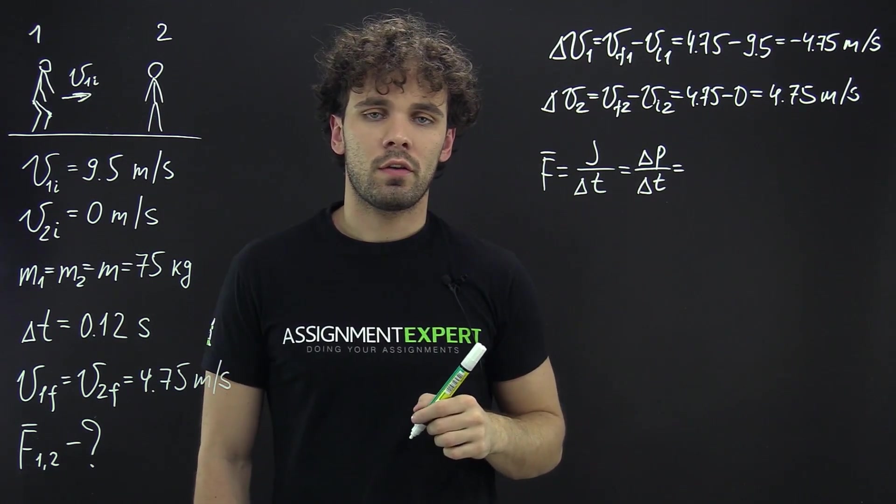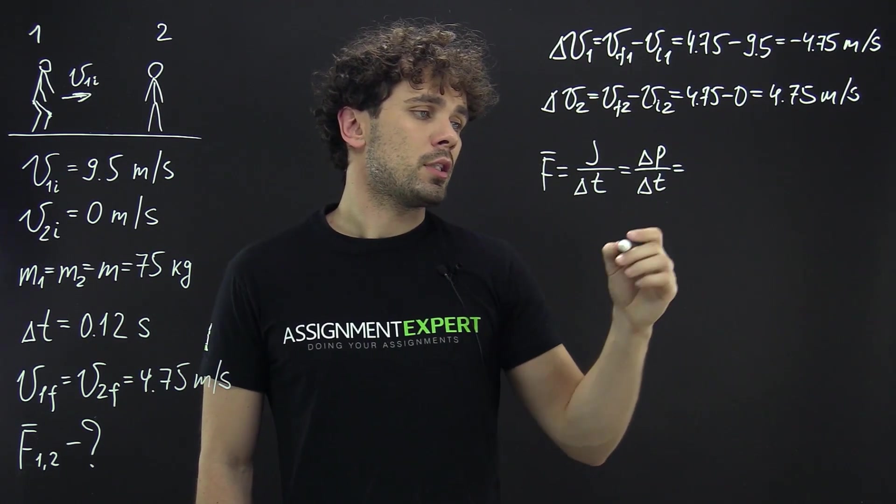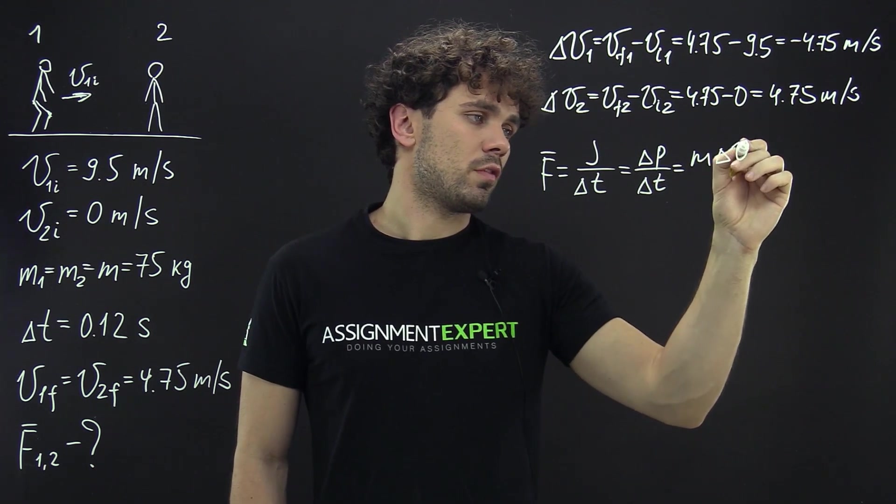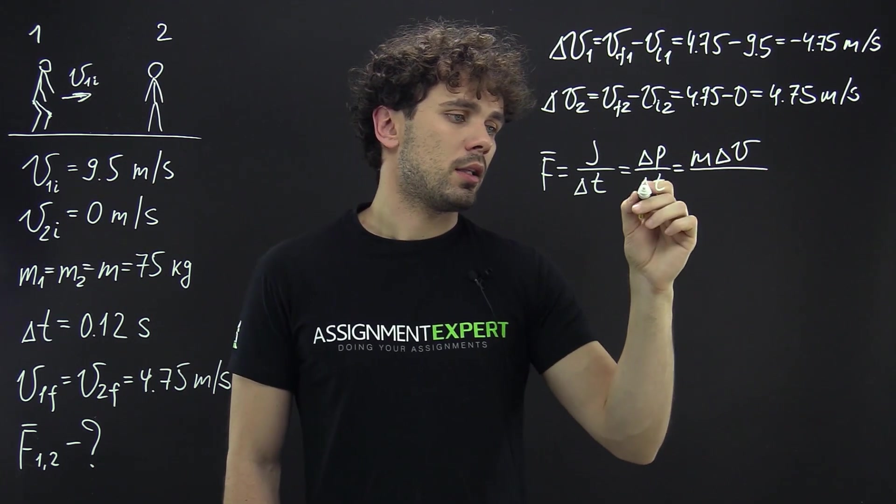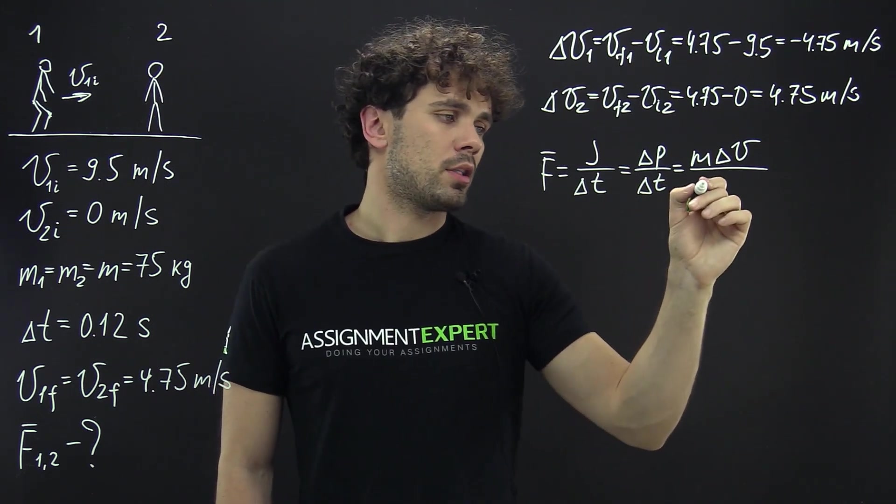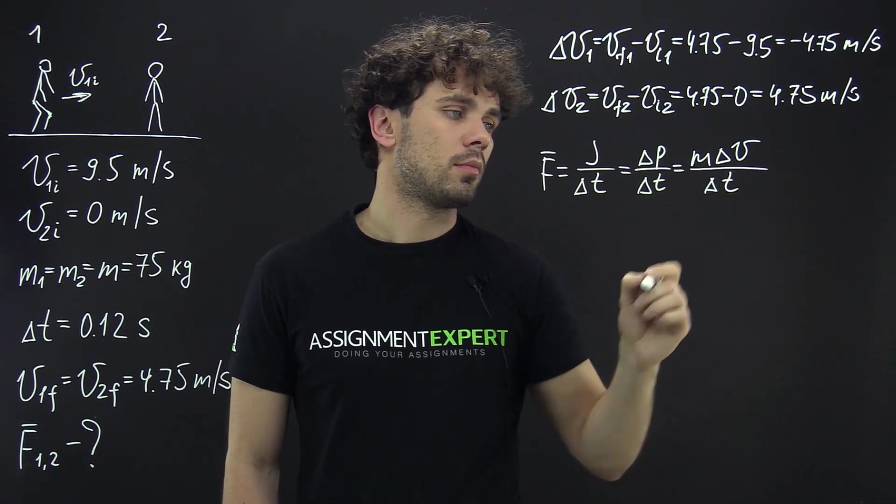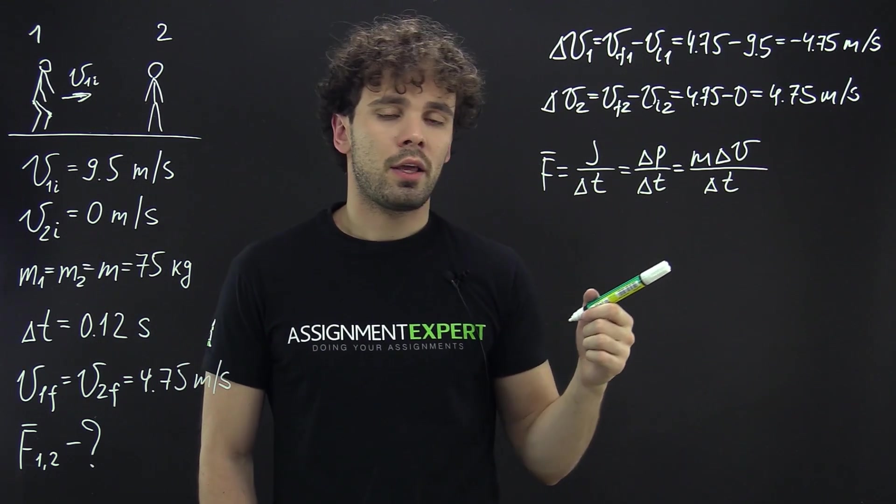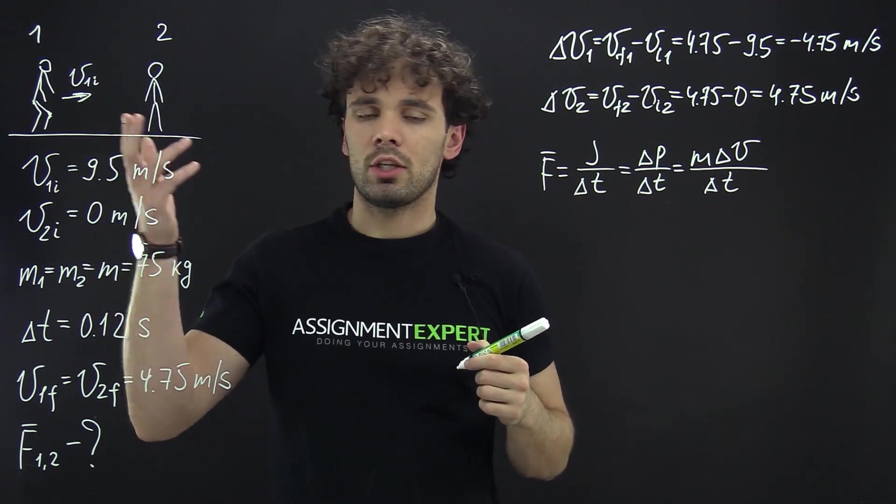According to the definition of momentum in the numerator we will get the mass of the object multiplied by the change of the speed of this object and in the denominator we have our time interval delta T. So now we have this formula that we can use to find the average force experienced by each skater.